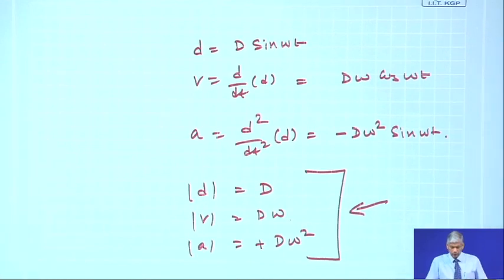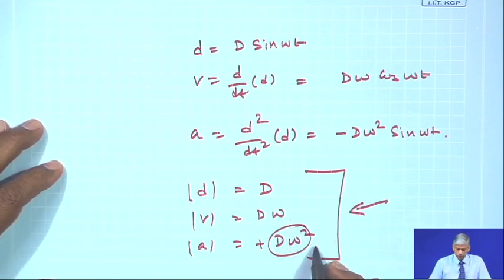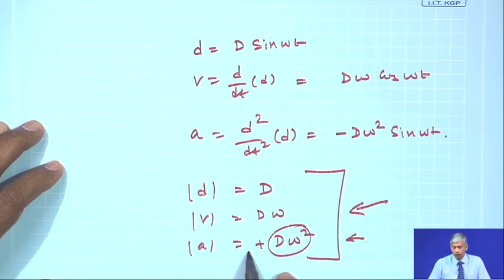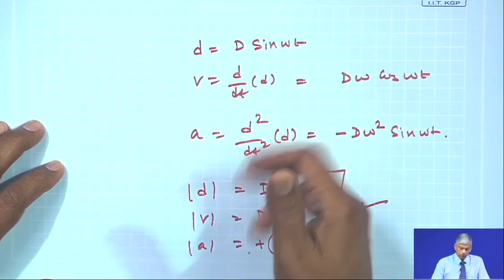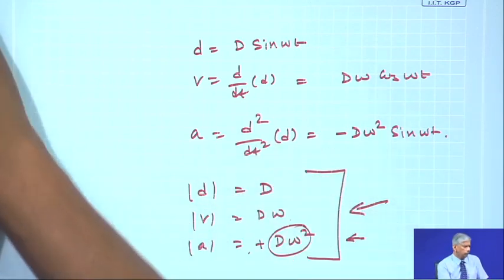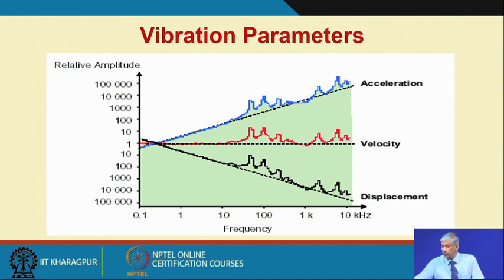A common question is: what is the best parameter to measure for CBM? At high frequencies, measure acceleration because ω² is large, giving good signal-to-noise ratios. At low amplitudes, displacement is good enough. Some standards recommend measuring velocity since it is approximately linear in the log scale. Nowadays piezoelectric accelerometers are widely available; by knowing one parameter and the frequency you can compute the others.